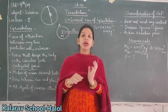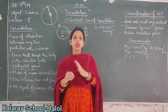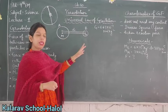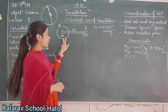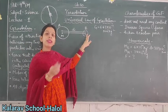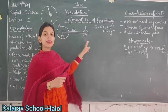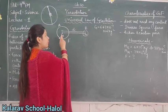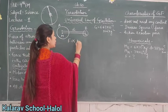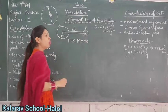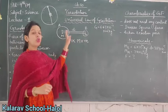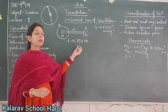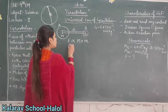The next topic is the universal law of gravitation. This law governs the attraction between two objects. Consider two objects A and B. A is a heavy object having mass M, and B is smaller than A having mass m. Both are at a distance D apart. The force between A and B is directly proportional to the product of their masses M and m.